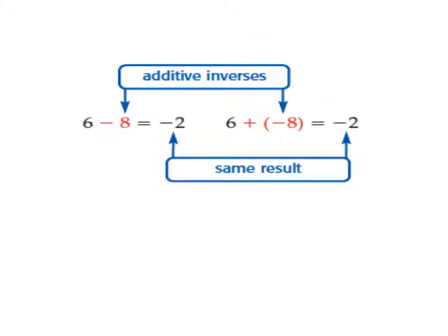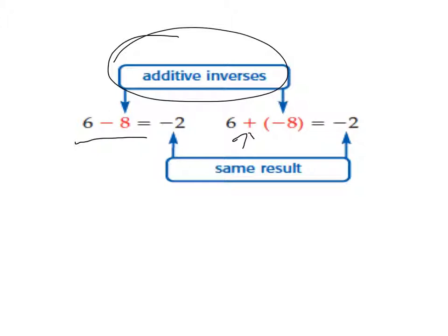One more example: 6 minus 8 is equal to negative 2. If you're having difficulty doing that, we're going to use the additive inverse — take the subtraction sign, change it to addition, and take that positive 8 and make it a negative 8. We use the rules from 2-2 for adding: we have different signs, so 8 minus 6. When we have different signs, we subtract and always put the bigger number on top. We get 2, and then we always take the sign of the largest absolute value, which is negative, giving us negative 2.